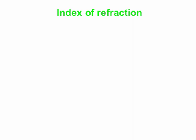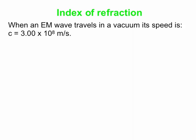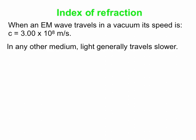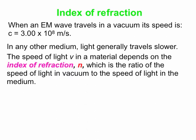This is where the index of refraction comes in. In a vacuum, an electromagnetic wave travels at a speed we call C, the speed of light — 3 times 10 to the 8 meters per second. We're often going to be talking about light, but really anything we talk about today applies to all electromagnetic waves. In any other medium, light generally travels slower than C.